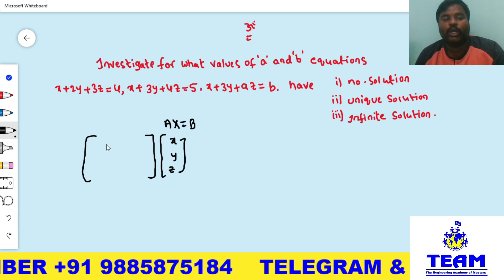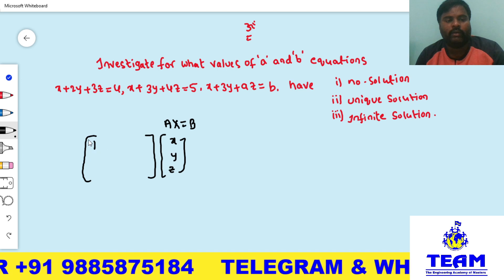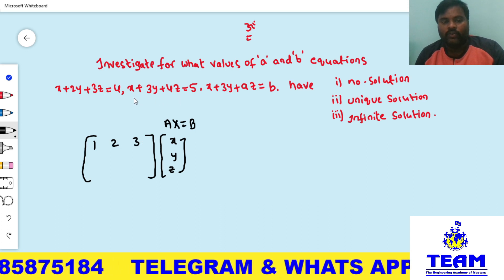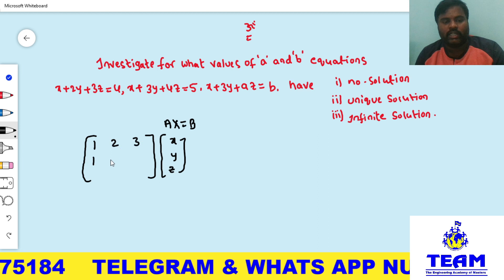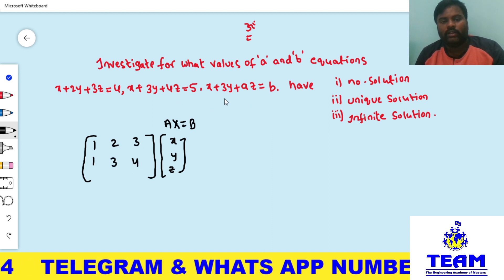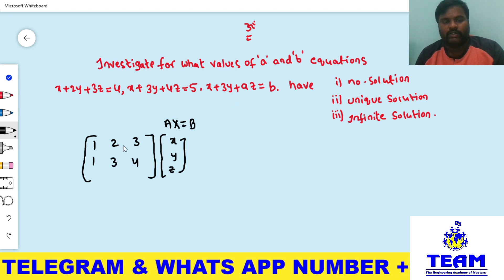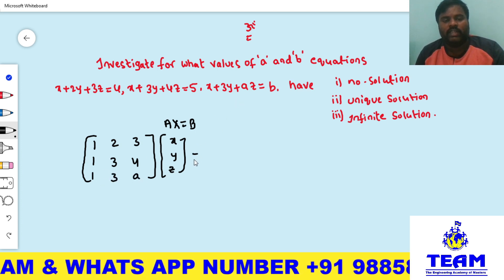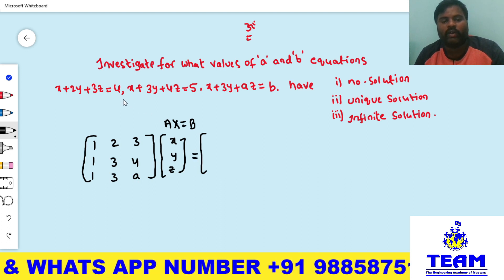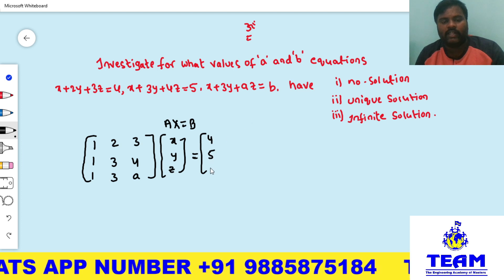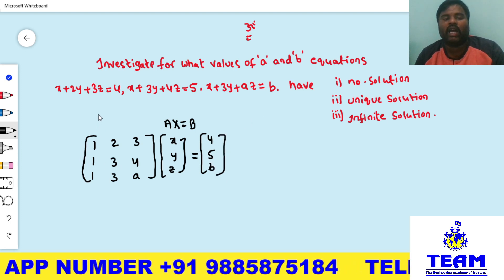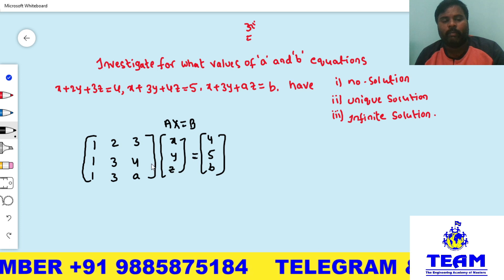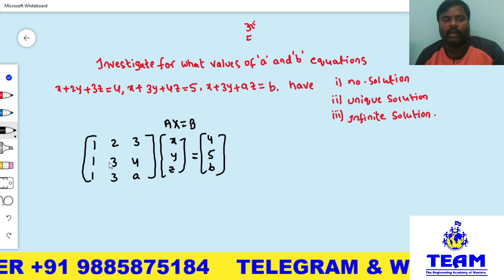We write matrix A as the coefficient matrix: first row is 1, 2, 3; second row is 1, 3, 4; third row is 1, 3, a. The constant matrix B is [4, 5, b]. We have now converted the system into matrix form AX = B. Next, we write the augmented matrix [A|B] by combining A and B into one matrix.